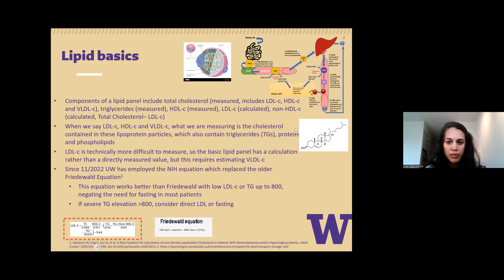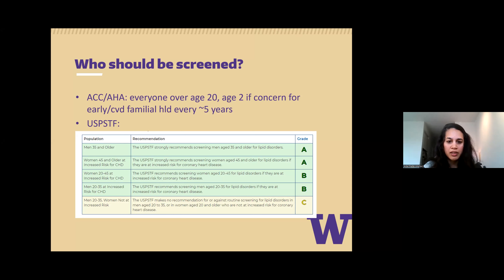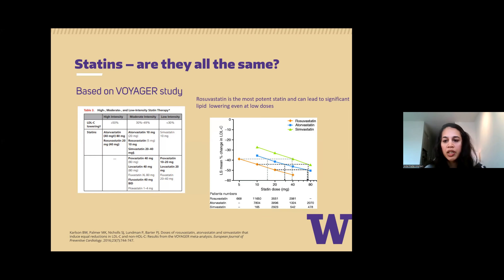For screening, I go by ACC/AHA, which is really just screen everyone over 20. USPSTF is much more conservative — no recommendation for screening women not at increased risk, recommends screening all men starting at 35, and all people at risk starting at 20, and women at 45 if they have risk factors. I would just say start screening everybody at 20 every five years.